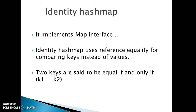Two keys in IdentityHashMap are said to be equal if and only if k1 == k2. But in the case of HashMap, two keys are said to be equal if and only if k1.equals(k2).